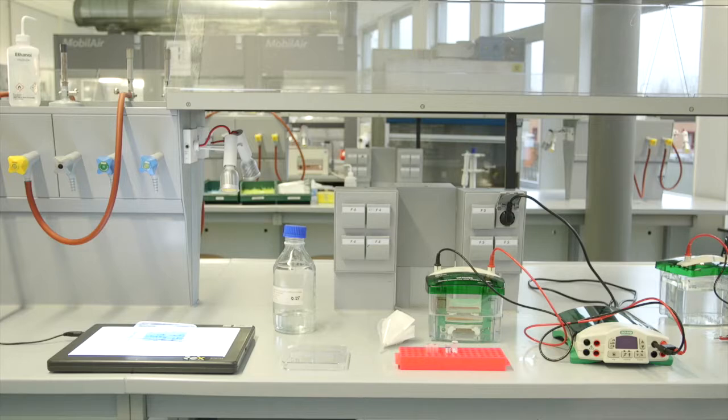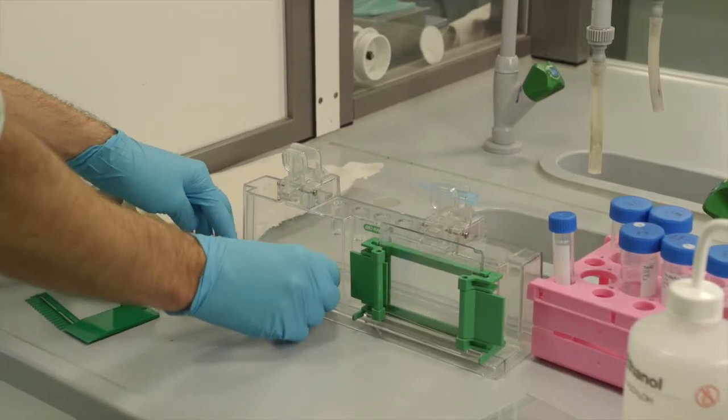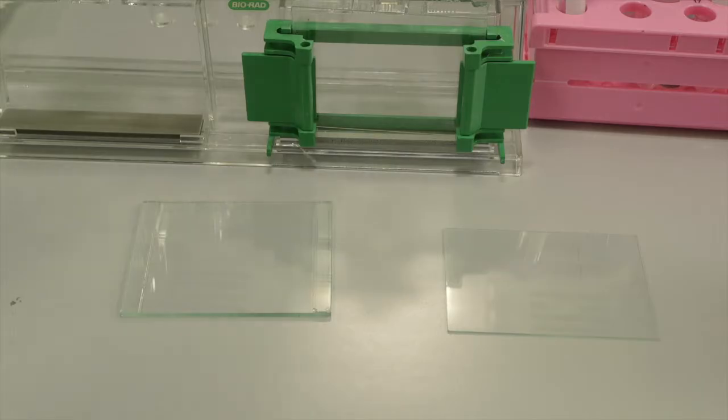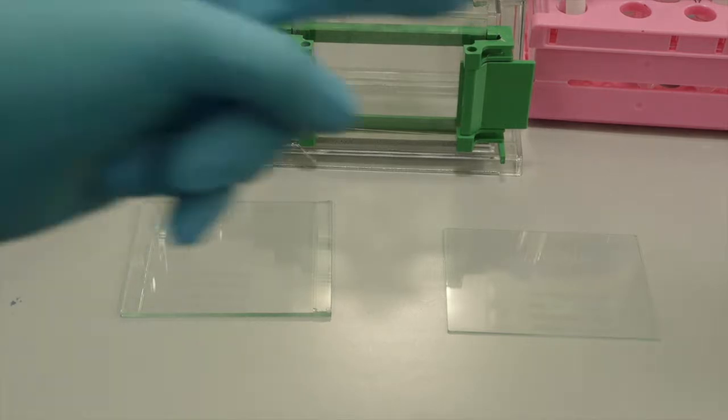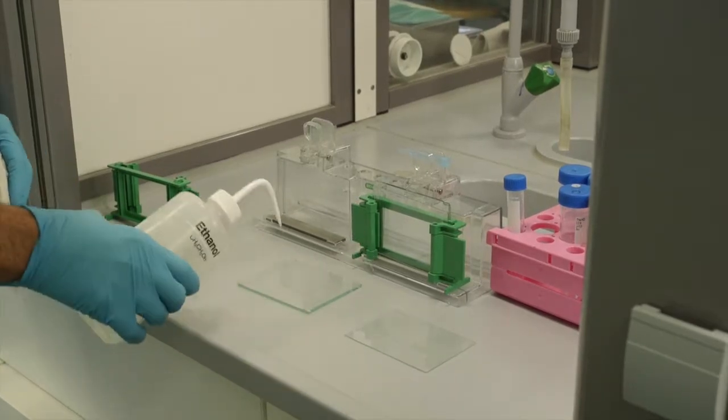Large glass petri dish, light box, the SDS electrophoresis system with a power supply. Place a rubber on the casting stand. There are two glass plates needed for casting a gel: a spacer and a short plate. The glasses should be cleaned thoroughly before use with 70% ethanol.